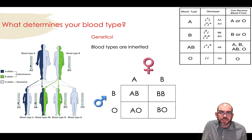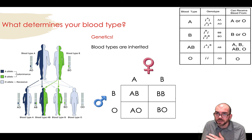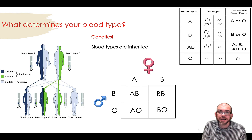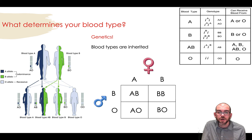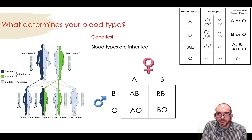Just so you're aware with the blood typing system, oftentimes we use the ABO letter annotation, but sometimes two I's can be used. As you can see in this table with the genotype, type A blood can be represented by little i superscript A, little i, or little i superscript A, little i superscript A. The blank on top of the little i just means O.